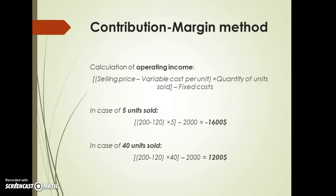Emma will incur a cost of $120 for each package that she sells. To get an idea of how operating income will change as a result of selling different quantities of packages, Emma calculates operating income if sales are five packages and if sales are 40 packages.